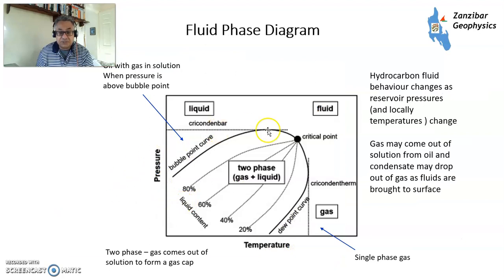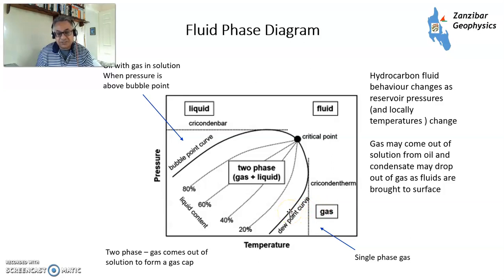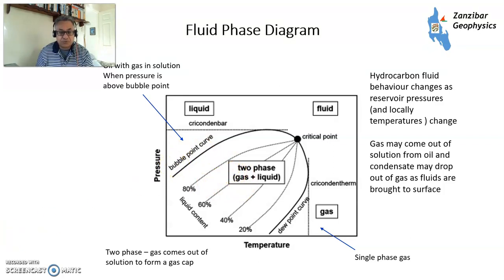Fluids also help. This is a fluid phase diagram for gas, liquid, and two-phase gas and liquid. You have different recovery factors for different fluid types. A key thing to bear in mind — particularly if you're in the gas phase — is you get condensate dropout. If you get degasification, when the oil reservoir goes below bubble point, you also get problems. So you want to keep pressure up if you possibly can.